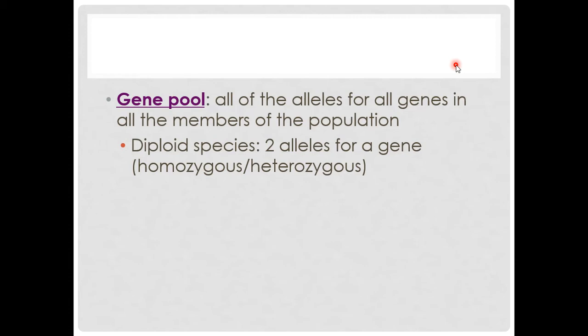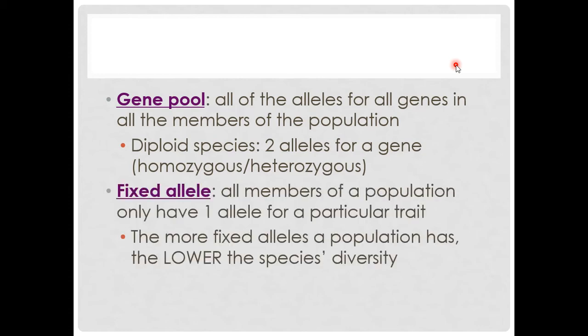A friendly reminder: if you are a diploid species — as most organisms we look at in class are — you have two alleles for every gene, because you have two copies of every chromosome. There are a few exceptions like X-linked traits, but this is a good general rule. Because we have two alleles, we can either be homozygous, meaning two copies of the same allele, or heterozygous, meaning one copy is one allele and the other copy is a different allele.